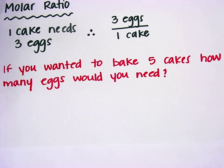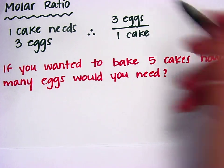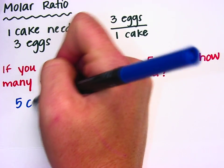You can probably answer this question without me even doing the work, but since this is chemistry, we want to set it up in a ratio problem. So I'll start with my given information of five cakes.